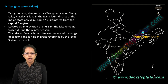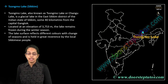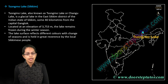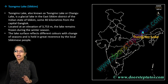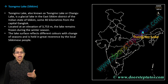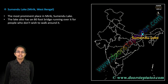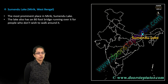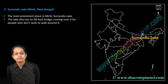Tsongmo Lake is located in Sikkim, in eastern Sikkim, nearly 40 kilometers from Gangtok. Every season you have different colors seen in the lake, making it very unique.